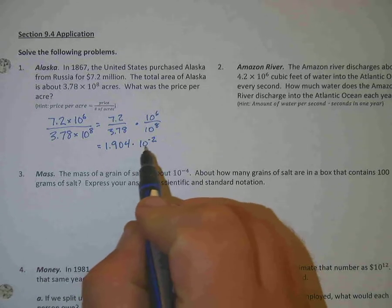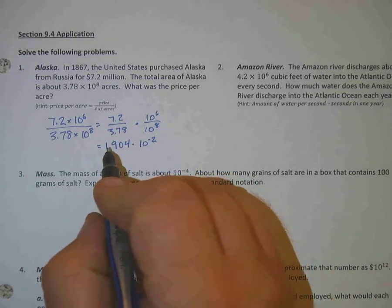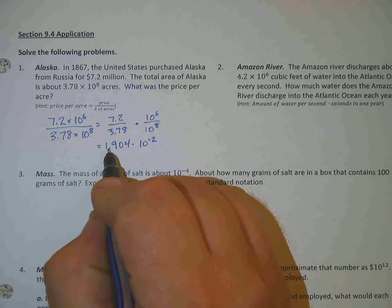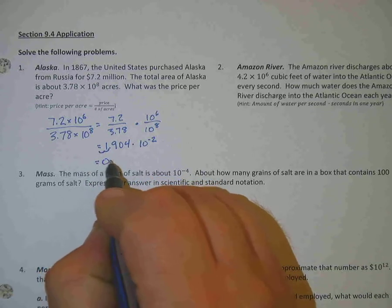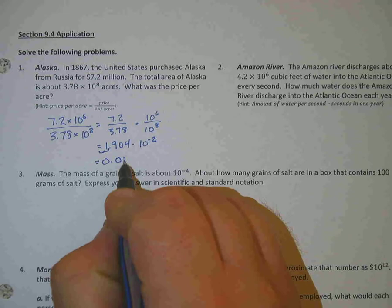We don't usually like it with that negative exponent there. So I'm going to go ahead and move the decimal back two spots. So we would get 0.019.